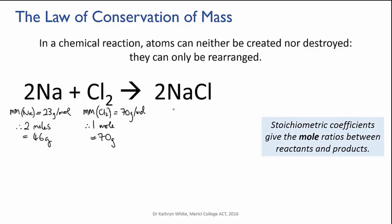For the product, the molar mass of sodium chloride is 58 grams per mole, and we produce two moles of it. So the mass produced is 116 grams.